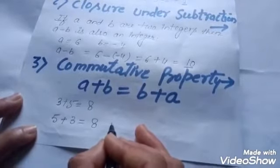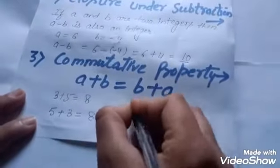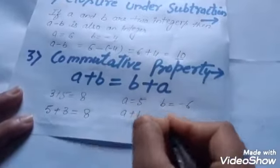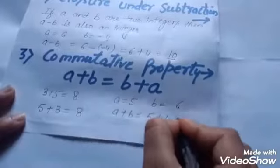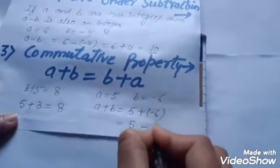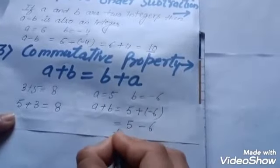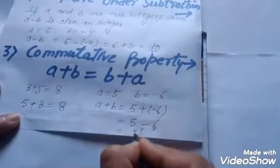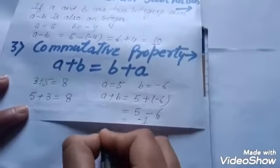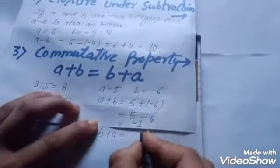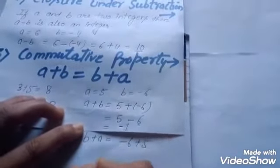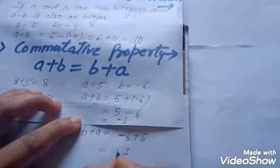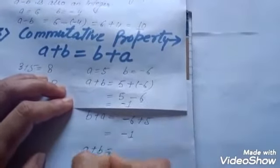Take two integers: a equals five and b equals minus six. Find a plus b: five plus minus six — plus minus is minus — six minus five is one, and six is the greater number with a negative sign, so a plus b equals minus one. Now find b plus a: minus six plus five — six minus five is one, and six is the greater number with sign minus. So a plus b equals b plus a.